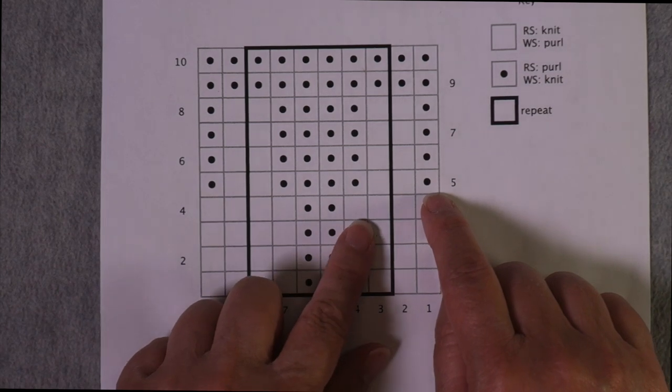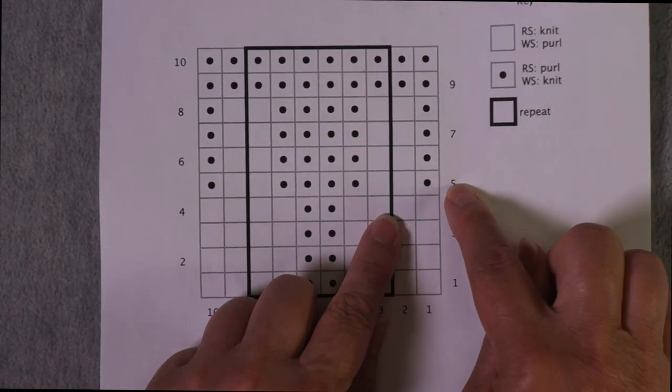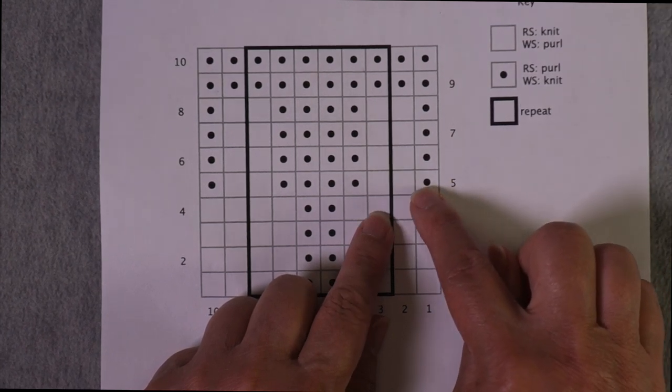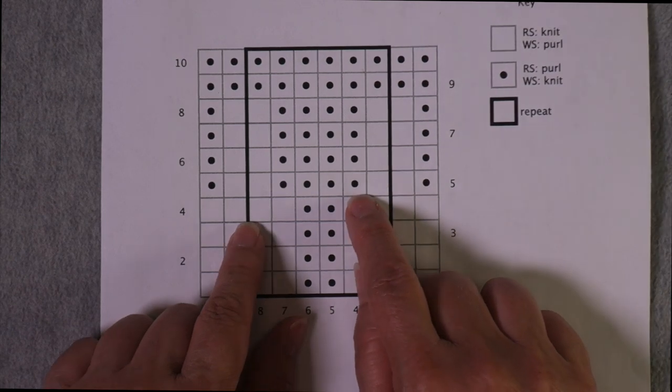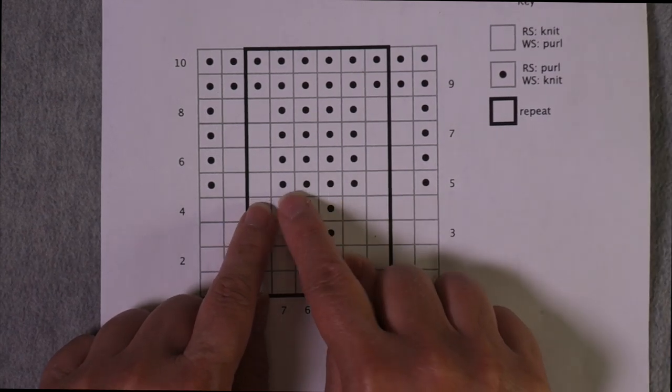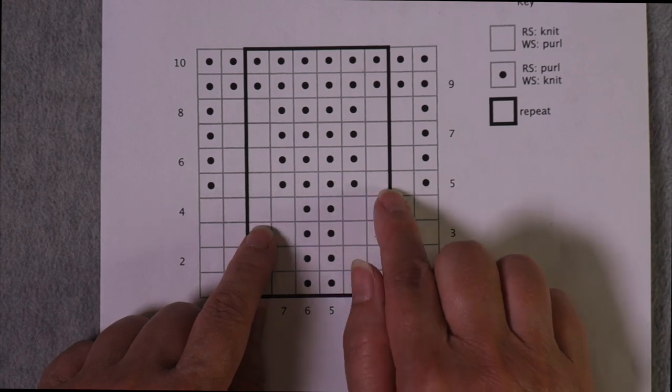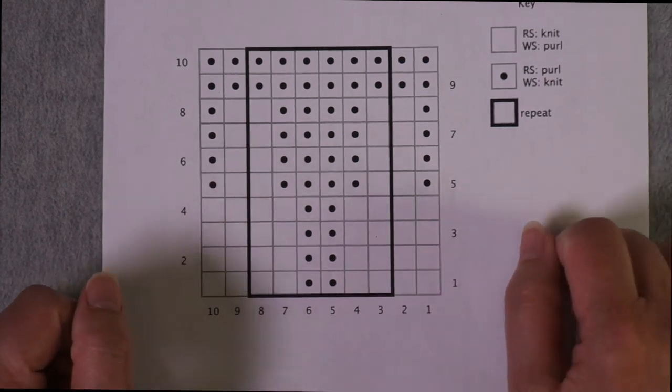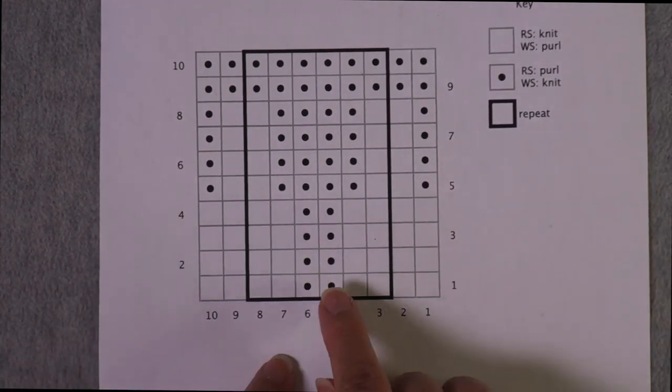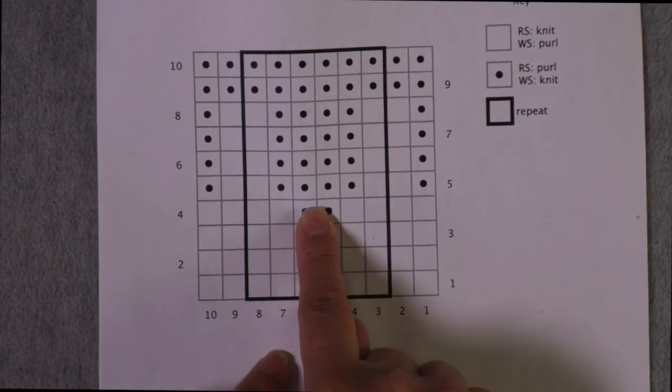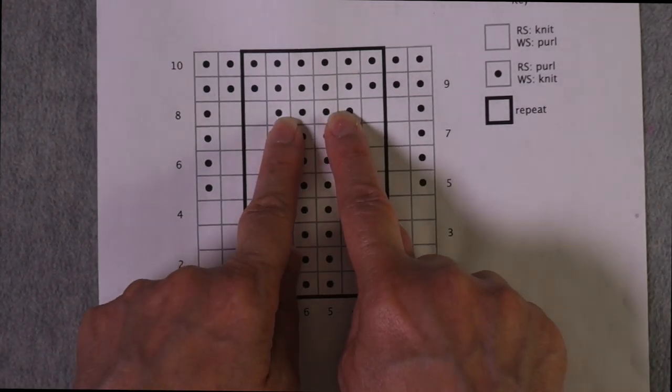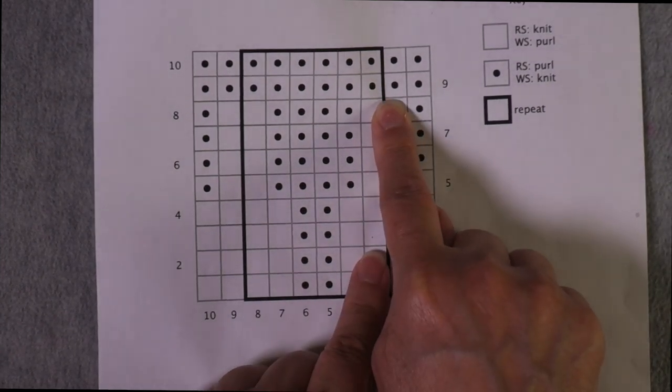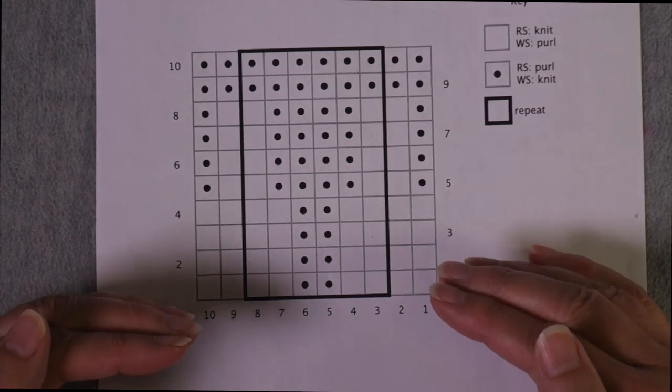Then when I get to row number five, that's when I have to pay a little more attention. Well this is a right side row because I have the number at the right edge. I'm going to work a purl stitch, and then I'm going to work two knits, four purls, two knits, four purls, so I'm alternating two knits with four purls instead. And then I have this odd purl stitch at the start and the end. But what else is happening? Well the column of two purl stitches is becoming a column of four purl stitches, and the columns of four knit stitches become columns of two knit stitches. So you can look at it in that way too.